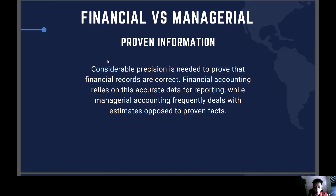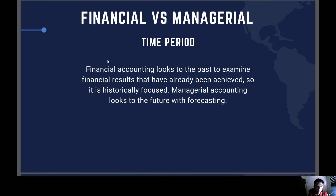The estimates in managerial accounting come from data gathered from previous strategies or actions of the company. Financial accounting relies on accurate data — whatever profit figures and data we collect from day-to-day or monthly reporting, that's what we provide to external users, like a more summarized version. Regarding time period: financial accounting looks to the past to examine financial results that have already been achieved, so it is historically focused.